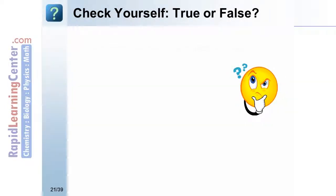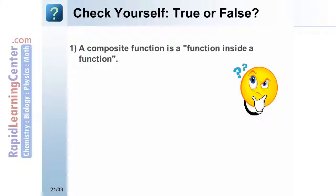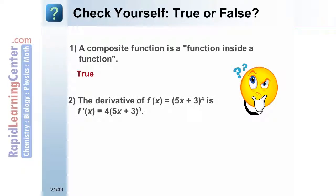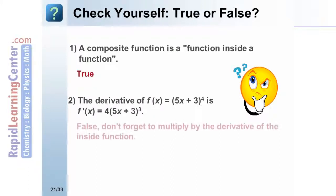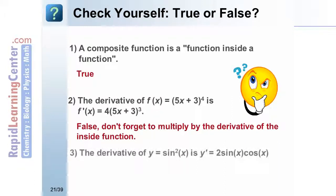Let's check ourselves with true or false questions. A composite function is a function inside of a function — True. The derivative of f of x equals the quantity 5x plus 3 to the 4th power is 4 times the quantity 5x plus 3 to the 3rd power — False, because we need to multiply by the derivative of the inside quantity, which is 5. The derivative of y equals sine of x squared is y prime equals 2 times the sine of x times the cosine of x — True.